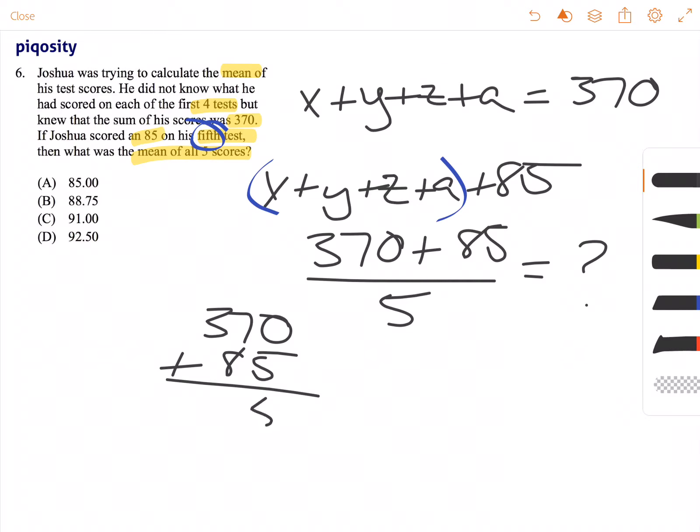So 5 there, 8 and 7 is 15, carry the 1, 455.